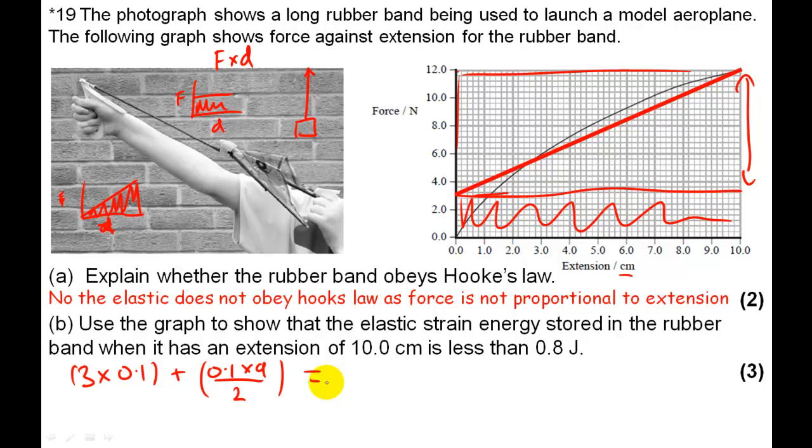So 3 times 0.1 is 0.3. That's going to be 0.9 divided by 2, which will be 0.45. And add them together comes to 0.75 joules. And as you can see, it is smaller than 0.8. So let's move on to the next part of the question.